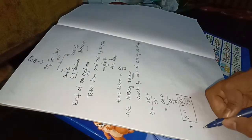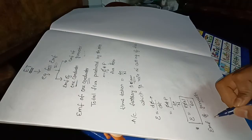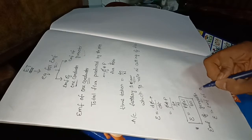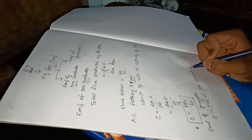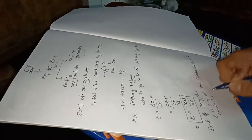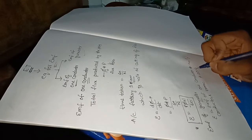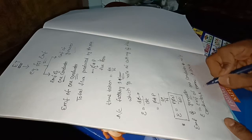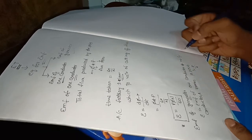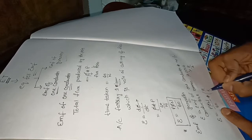The second formula is the EMF of a generator. The EMF of a generator equals the EMF of one conductor multiplied by the number of conductors connected in series. The number of conductors connected in series is given by Z by A. Substituting the EMF of one conductor formula P·phi·N / 60, and multiplying by Z by A: